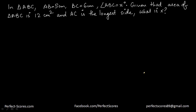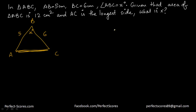Let's look at this question. We have a triangle ABC where AB is 5, BC is 6, and angle ABC is x degrees. Given that the area of triangle ABC is 12 and AC is the longest side, what is x? We need to find the area of this triangle, which will be equal to half times AB times BC times sin x.